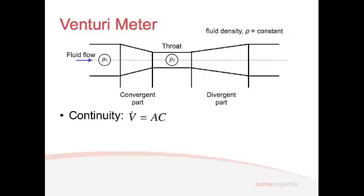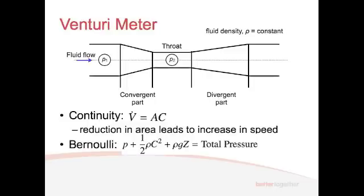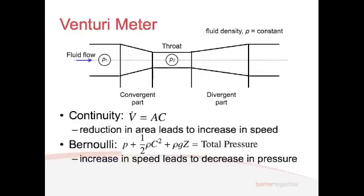And we know from continuity that V dot, the volumetric flow rate, equals A times C. And because of this relationship, we know that as the area reduces, the speed increases. This is like the example I showed you a few weeks ago with the ping-pong ball. The area around the ping-pong ball was reducing, so the speed went up. Now, what do we know about Bernoulli? Well, Bernoulli says that the total pressure is constant. And if we ignore the Z term here, and we just have the P and the one-half rho C squared, well, if C goes up, P must go down, because the total pressure is a constant. And so, we know that the increase in speed leads to a decrease in pressure. And so, there's going to be a difference between P1 and P2. And that difference means that P1 is greater than P2, so there's going to be a pressure difference of P1 minus P2.